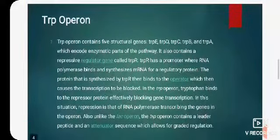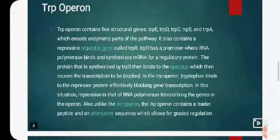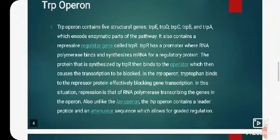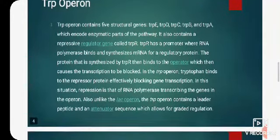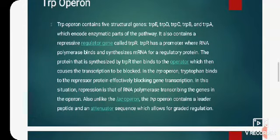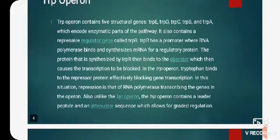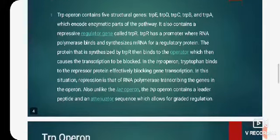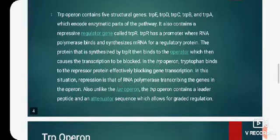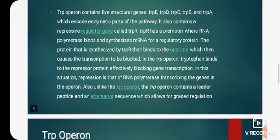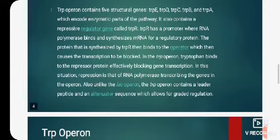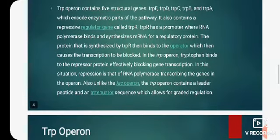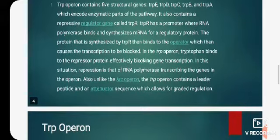So students, TRP operon contains five structural genes: TRP-E, TRP-D, TRP-C, TRP-B, and TRP-A, which encode enzymatic parts of the pathway. It also contains a repressive regulator gene called TRP-R. TRP-R has a promoter where RNA polymerase binds and synthesizes messenger RNA for a regulatory protein.